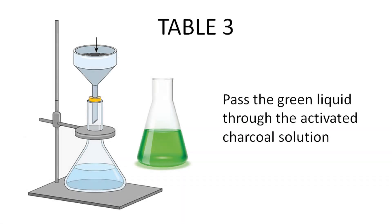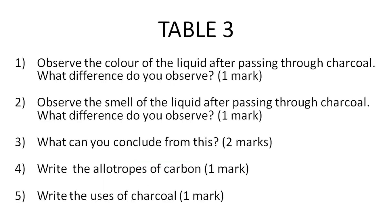On the next table, the experimental setup was already made. In a funnel, activated charcoal was kept. A green-colored liquid was given. You pour the liquid over the charcoal and collect what comes through. The first question was about color — initially the liquid is green, but after passing through charcoal it becomes colorless. Second, initially the liquid had a smell, but after passing through charcoal the smell also vanishes. Conclusion: activated charcoal is capable of absorbing water-soluble colors and water-soluble gases. The next question asked about allotropes of carbon — coal, diamond, and graphite are allotropes of carbon. Uses of charcoal: it is used in water filters, as a fuel for energy, and in charcoal pencils for drawing.